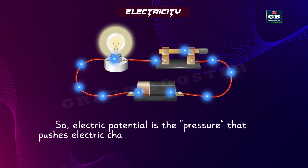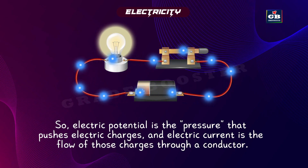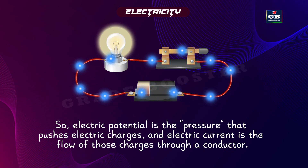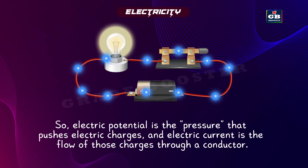Electric potential is the pressure that pushes the electric charges, and electric current is the flow of those charges through a conductor. So this is about electric potential and electric current.